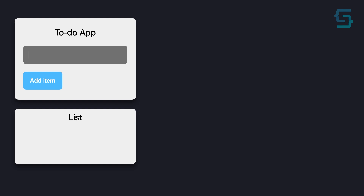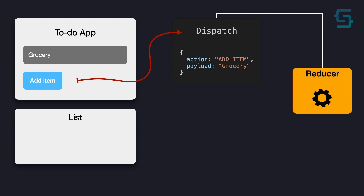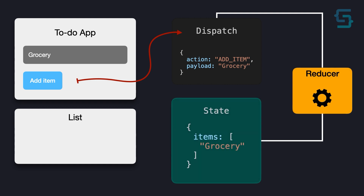Let's say that you want to add a grocery to your to-do list. You would click on an Add Item button. With this event, we would trigger a dispatch, and this dispatch would carry on an action and payload of what we want to add to a list. After that, our dispatch triggers a reducer function which manipulates our state. As a result, we get a new state of the items array and now we have a grocery inside of the list.